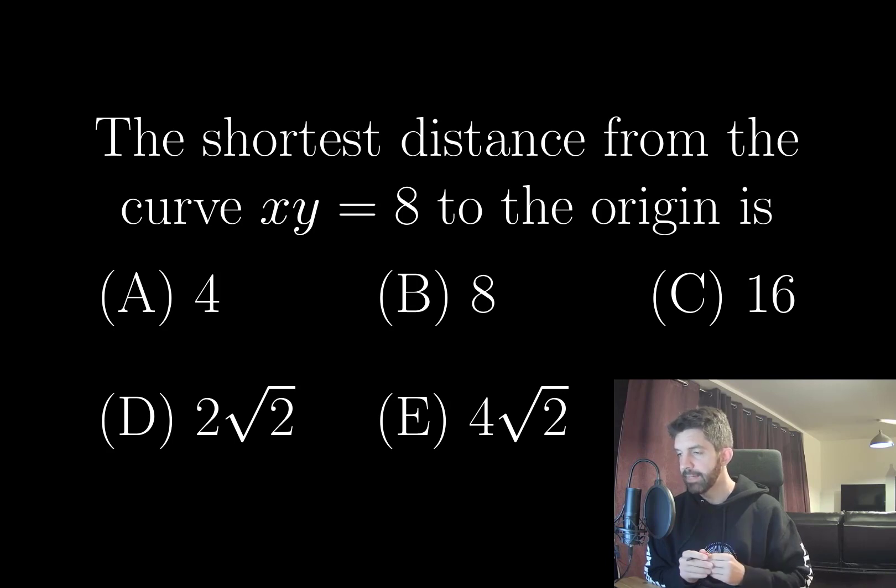Or we could write that distance out but make the substitution in the distance formula that y is equal to 8 over x, and then minimize that as a one-dimensional function. I don't know which of these is the best. I'm going to use the one-dimensional version actually and just hope things work out kind of nicely.